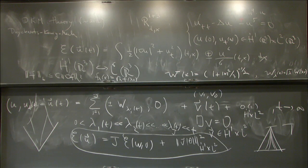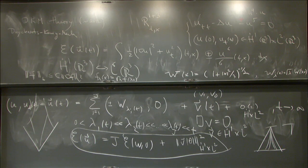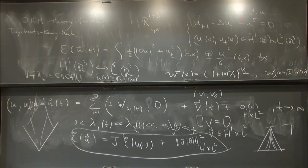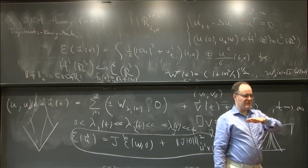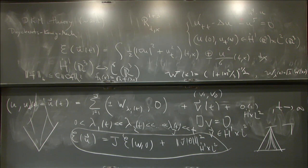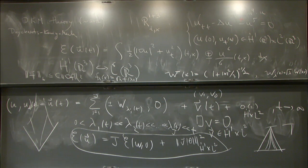Is there anything constraining the equation for λ as a function of t? Not within the DKM theory — it's largely based on indirect arguments, not on ODEs, not on so-called modulation theory. There is no set of ODEs governing the λ_j's. The expectation — and there are papers about this with Krieger, Nakanishi, and others — is that λ can be very erratic, even chaotic. That's the topic of a separate talk.